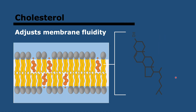Cholesterol makes up 20 to 40 percent of the lipids in the plasma membrane. It is a steroid and most of it is hydrophobic, so it's attached to the center of the membrane, positioned between the phospholipids. The fluidity of membranes needs to be controlled to regulate which substances can pass through, and cholesterol maintains an orderly arrangement of phospholipids. It stabilizes the membranes at higher temperatures but also ensures that it does not solidify at lower temperatures — it is a regulator of rigidity.